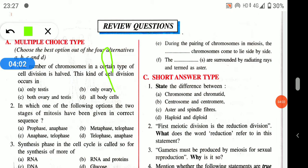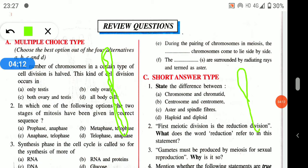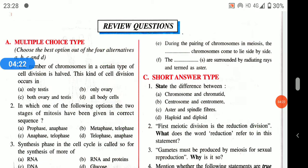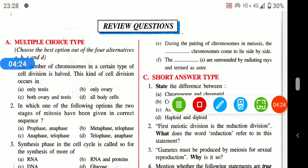A chromosome is a structure that consists of DNA. A chromatid is present in a duplicated chromosome — each thread-like structure of a duplicated chromosome is called a chromatid.